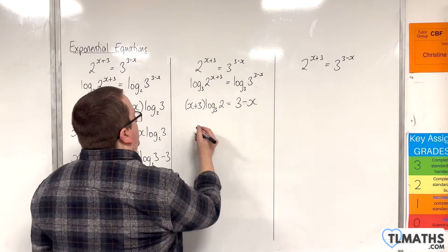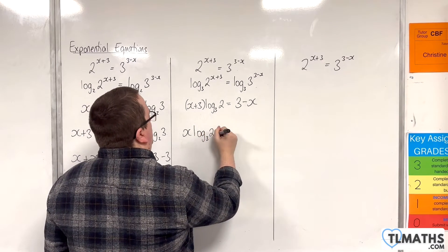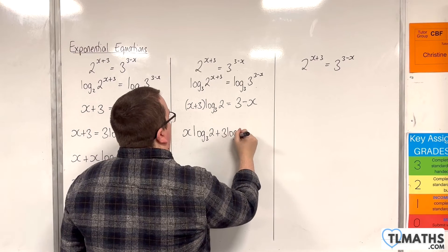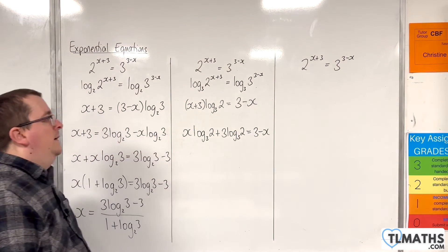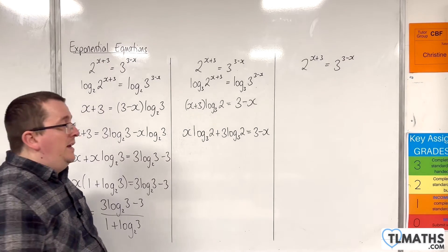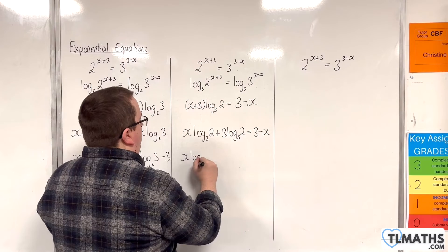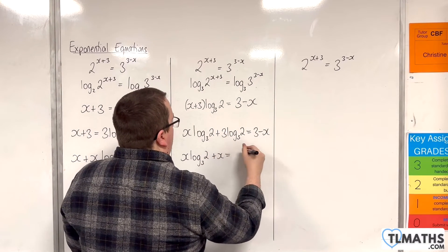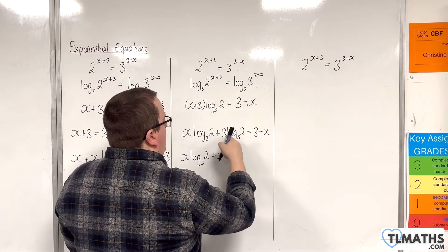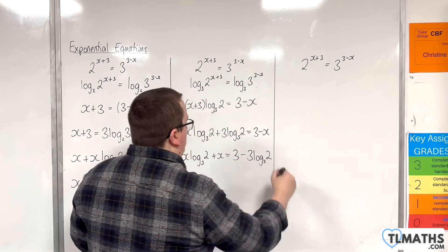The left hand side, expand the brackets out, so x log base 3 of 2 plus 3 log base 3 of 2 is 3 minus x. Then we want to get all the x's on the left hand side, so I'm going to write x log base 3 of 2 plus x is equal to. The 3 there can stay where it is, but we're going to move that to the right hand side, so take away 3 log base 3 of 2.